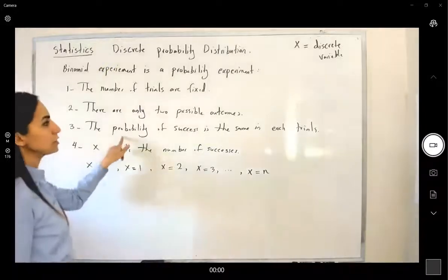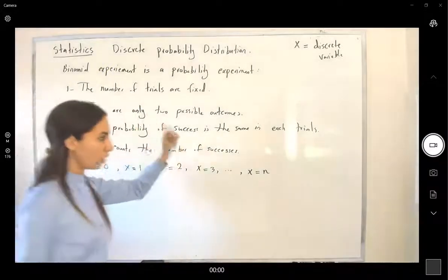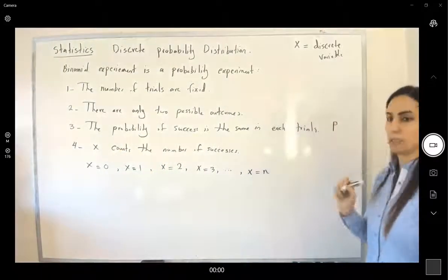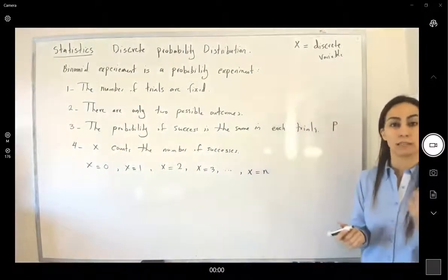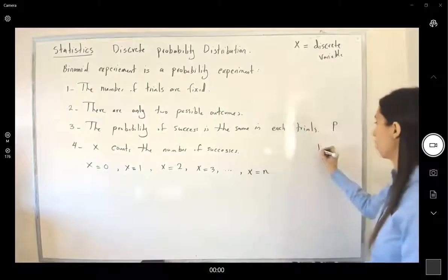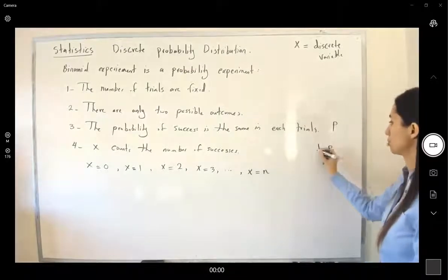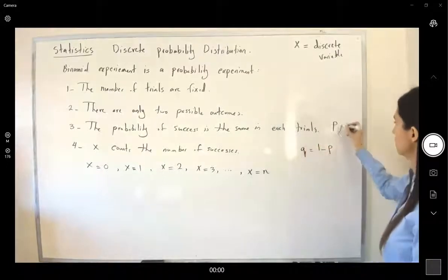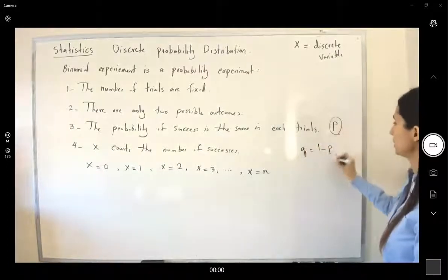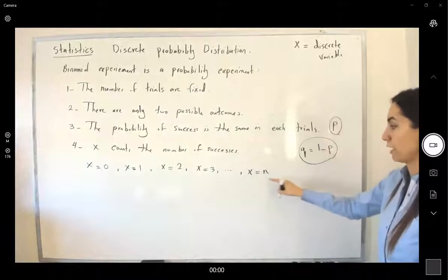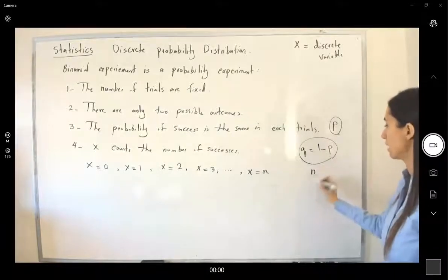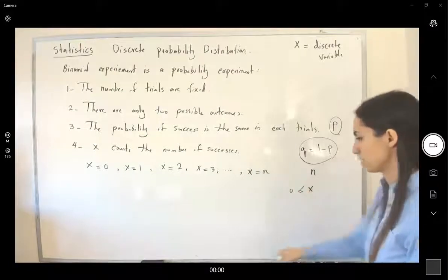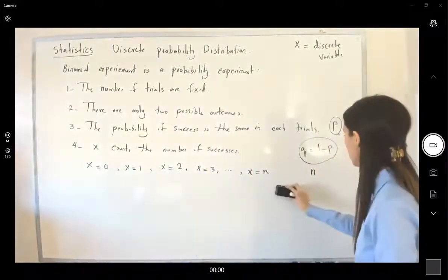The probability of success in one trial is denoted by p, and the probability of failure in one trial is 1 minus p, which we denote by q. So we have p, q, n, and x, where x counts all numbers from zero to n.